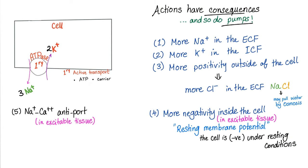Actions have consequences — and so do pumps. The sodium-potassium ATPase (primary active transport) requires energy and a carrier: three sodium out, two potassium in — net one positive out, one negative in. That one positive out pulls chloride outside, and sodium chloride pulls water by osmosis. This creates electronegativity inside the cell, which is the resting membrane potential — the basis of action potentials and synapses.